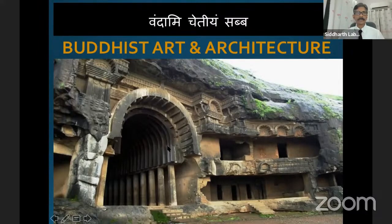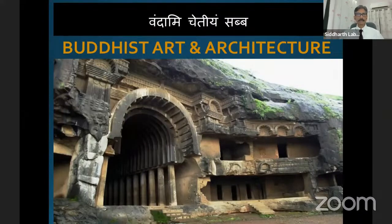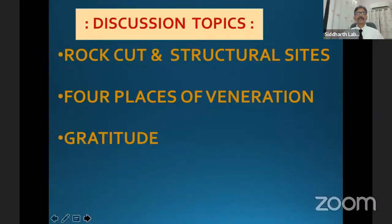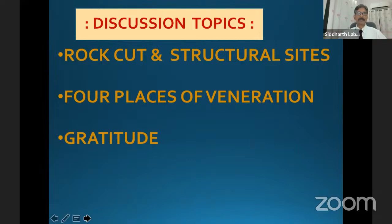Definitely, those suggestions are welcome. You can tell me in between. So we'll be talking about Buddhist art and architecture. Mainly, art and architecture covers two parts — that is rock cut and structural sites. Then we'll be discussing four places of veneration and will express the gratitude to those because of whom we come to study all these Buddhist sites, and how they have brought us this Buddhist art and architecture for our veneration.